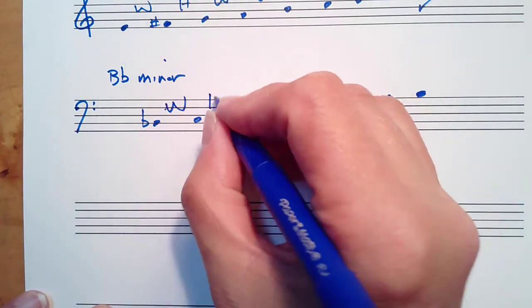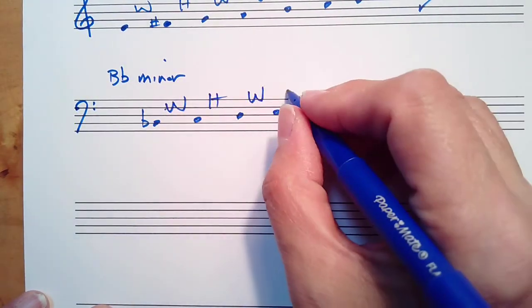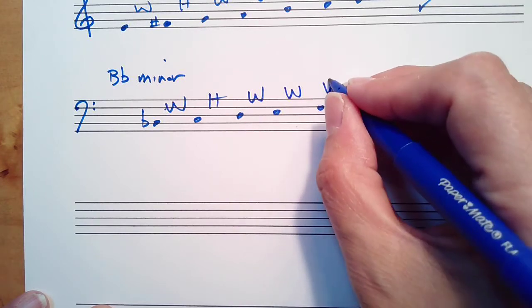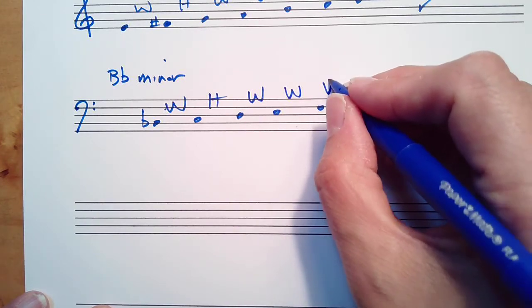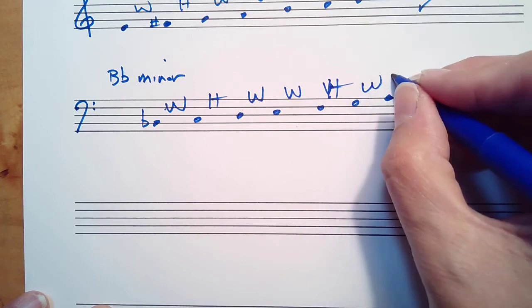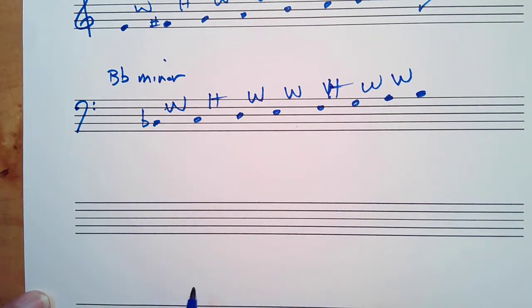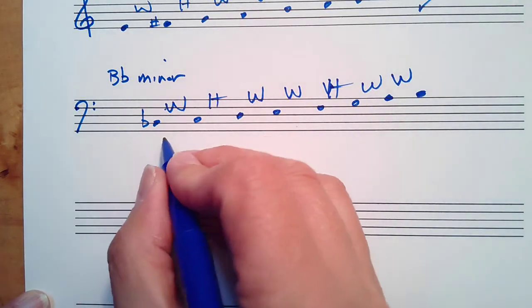So now we're going to take our pattern right here and we're going to write that between the notes of the B flat minor scale: whole, half, whole, whole, half, whole, whole.